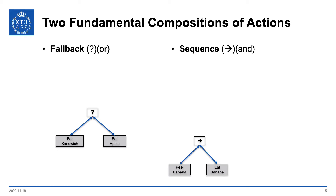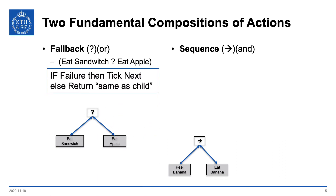There's a fallback, denoted by a question mark, and you can think of it as OR. And then there's a sequence, denoted by an arrow, and you can think of it as AND. For the fallback we have this example: eat sandwich or eat apple. The rule is: if you fail in the first action then you tick the next child, else you return the same as the child. So you try eating the sandwich; if that fails you go on to eat the apple. But if eat sandwich is running, you keep running; if eat sandwich succeeds then you're happy — you're not hungry anymore.